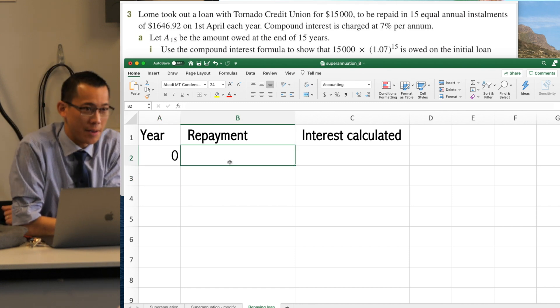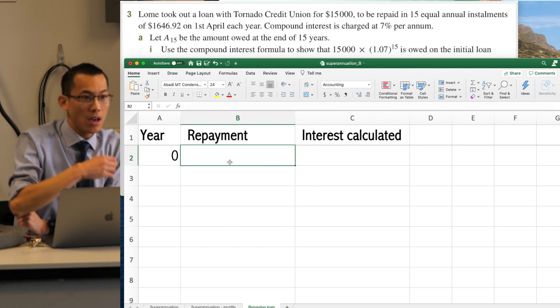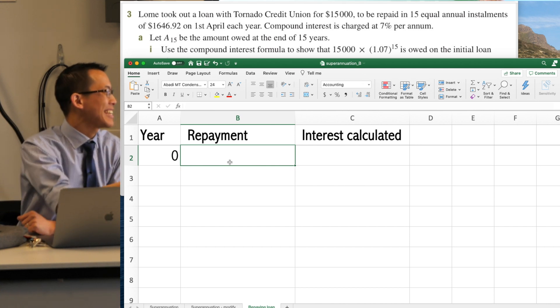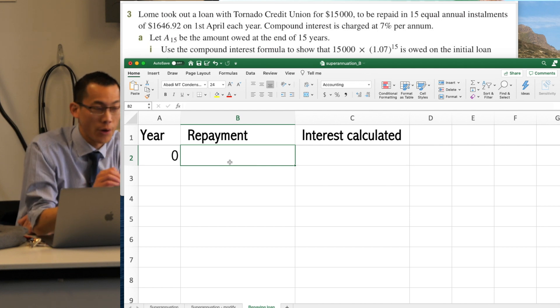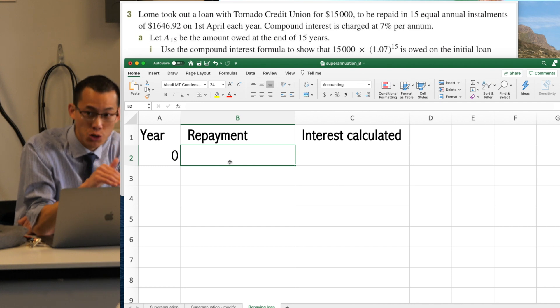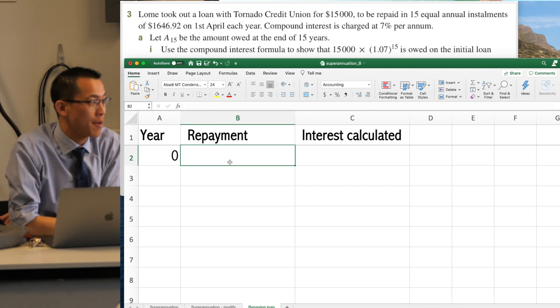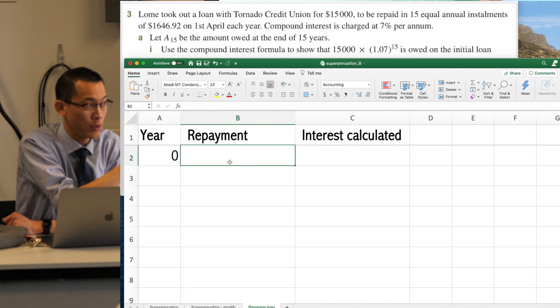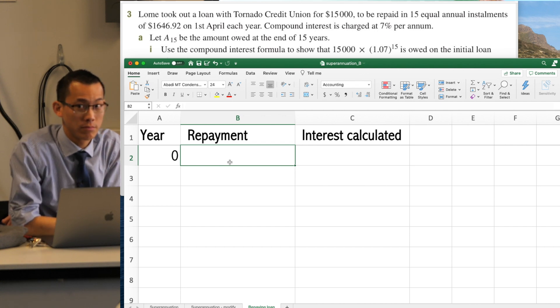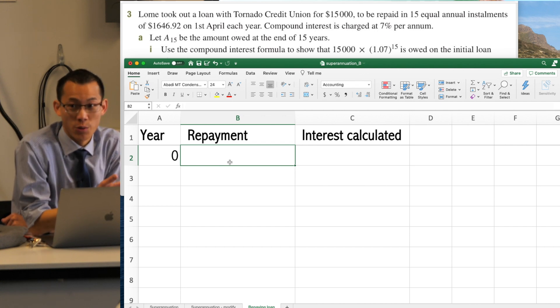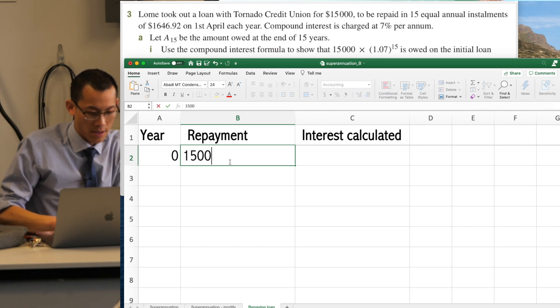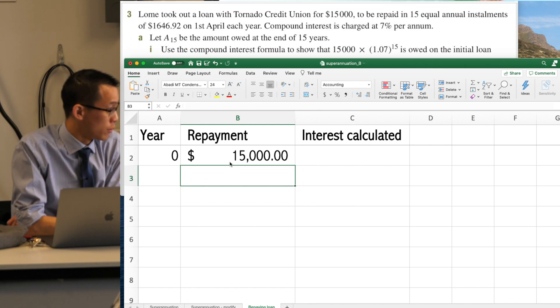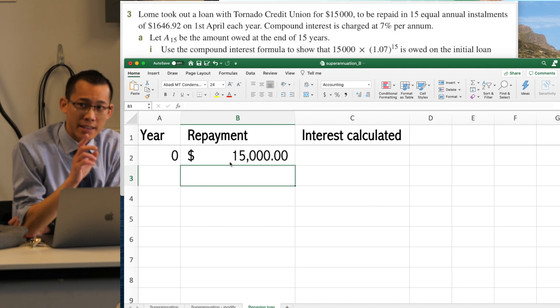When it says repayment there, what I mean is, the repayment that occurs, how does that impact the amount that is actually owing, okay? Now, in year 0, no repayments have actually happened yet. So how much do I owe before any repayments have been made? It's in the question. Have a look. Think, think, think. I've just taken out a loan, right? It's $15,000. That's how much I owe, right?